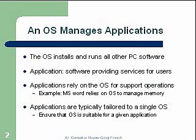An OS manages applications. The OS installs and runs all other PC software. Applications are software providing services for the user — Microsoft Word would be a type of application. Applications rely on the OS for support operations. For example, MS Word relies on the OS to manage memory, and also uses the OS to read and write files, make backups, or copy files.